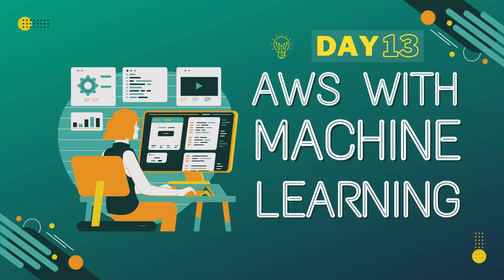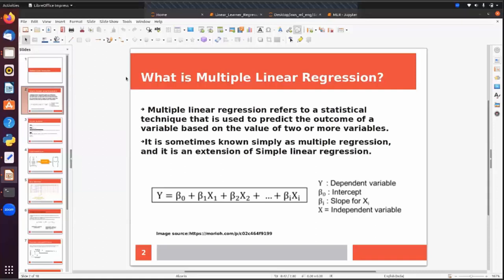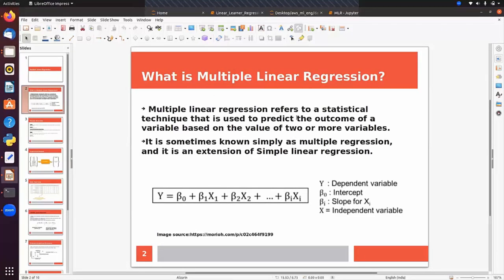Let's start the session. In this session we will talk about multiple linear regression. In this regression problem we will have more than one feature. Multiple linear regression refers to a statistical technique that is used to predict the outcome of a variable based on the value of two or more variables. On the basis of such features we can predict the output value.